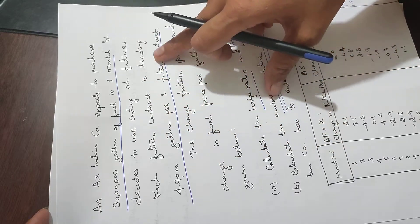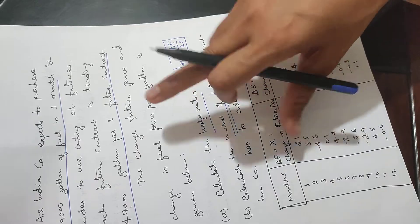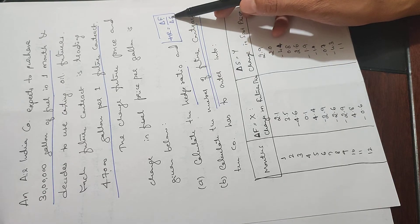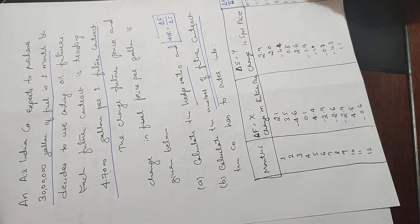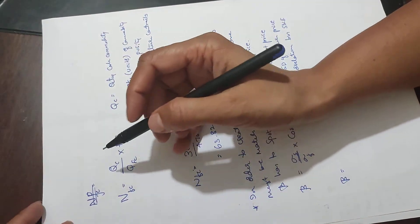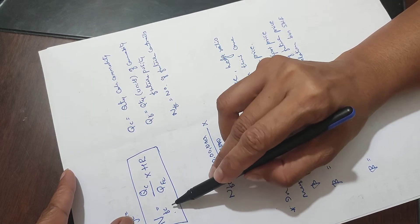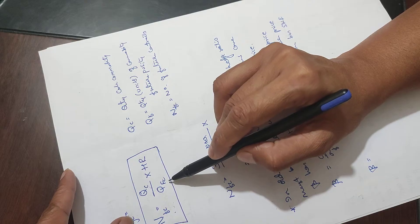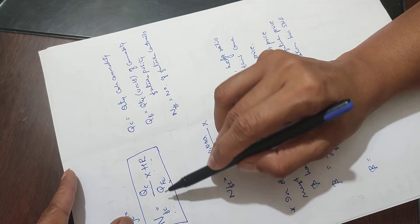The change in future price and change in fuel price per gallon is given. Hedge ratio equals change in future price divided by change in spot price. Calculate the number of future contracts required. The solution uses NFC - number of future contracts equals QC (cash commodity quantity) divided by QFC (quantity per future contract).